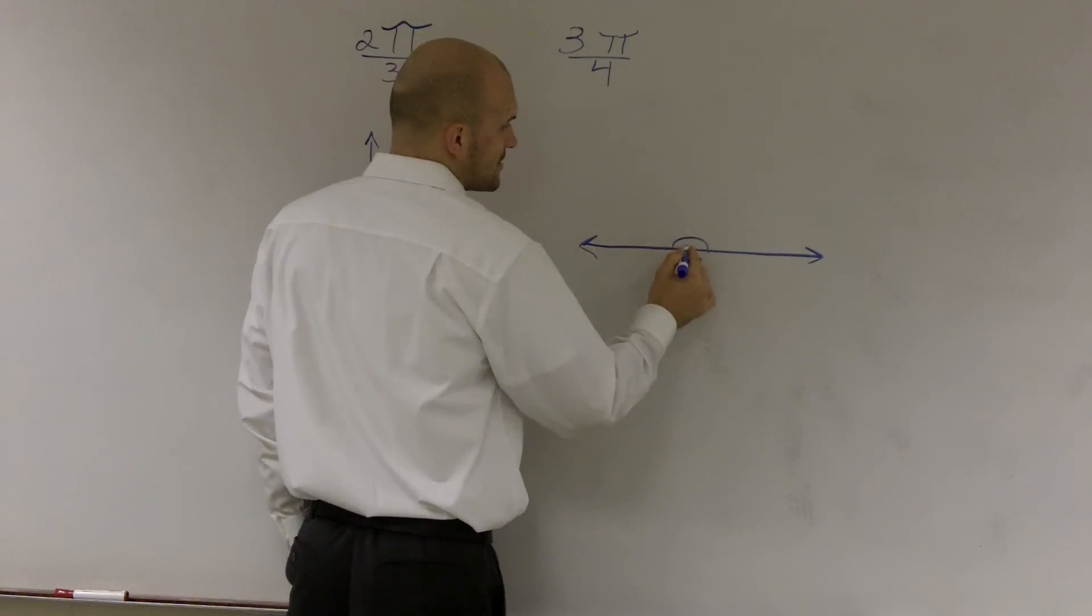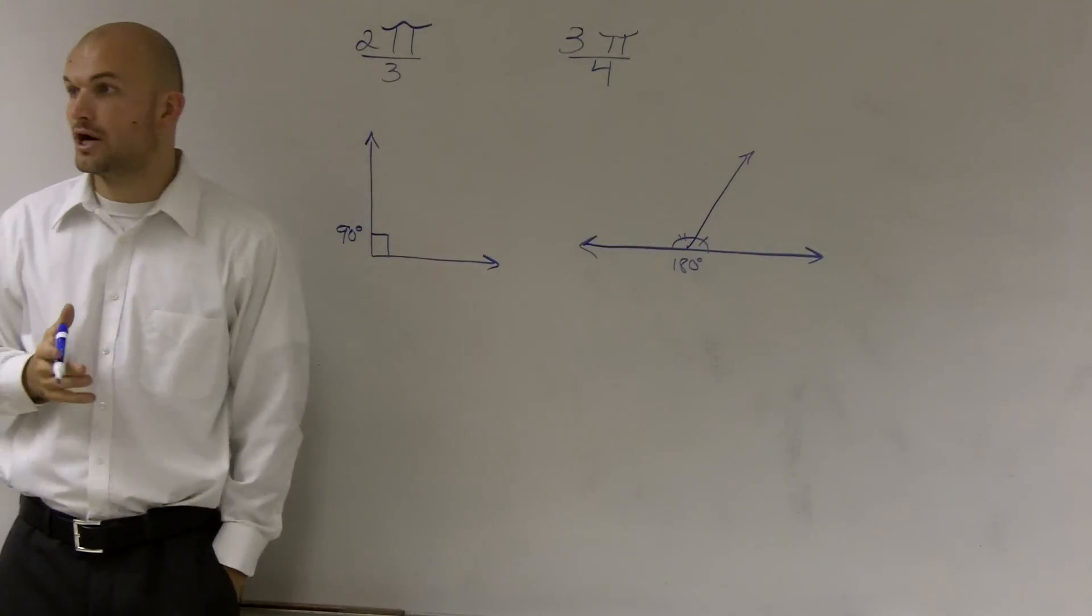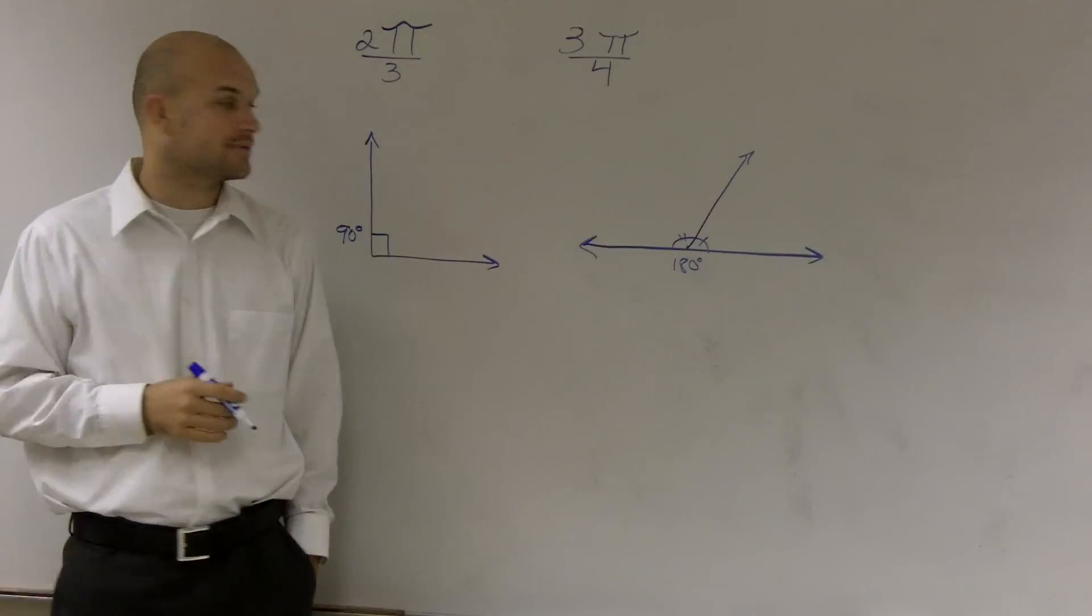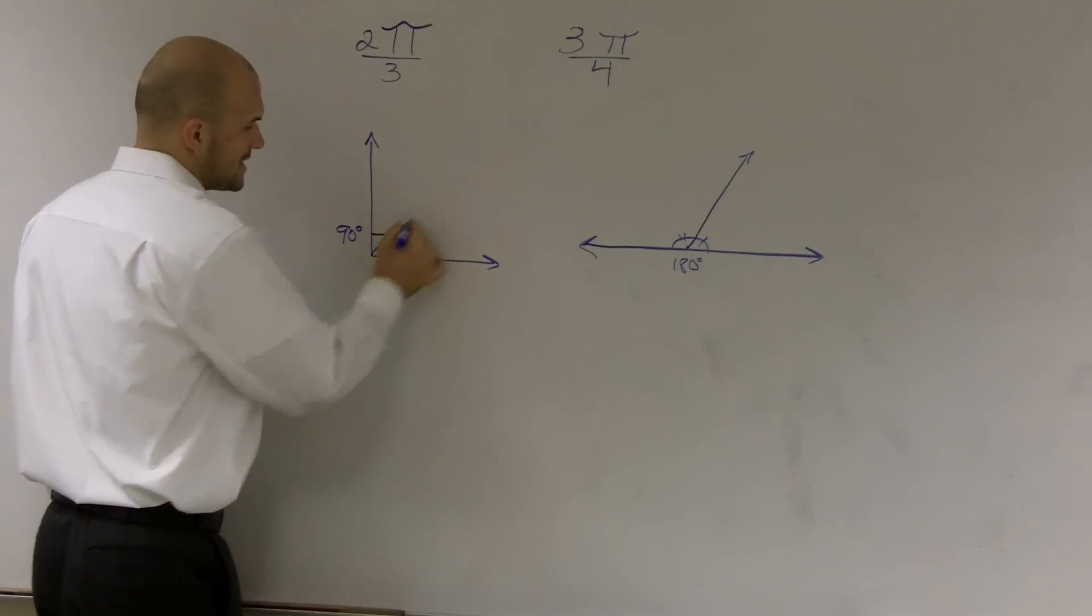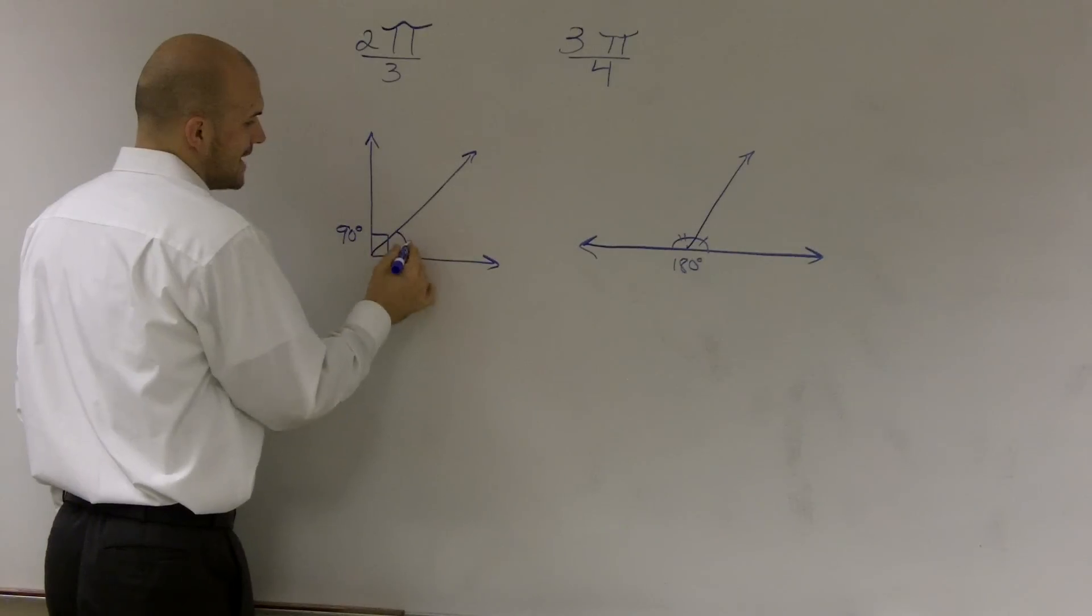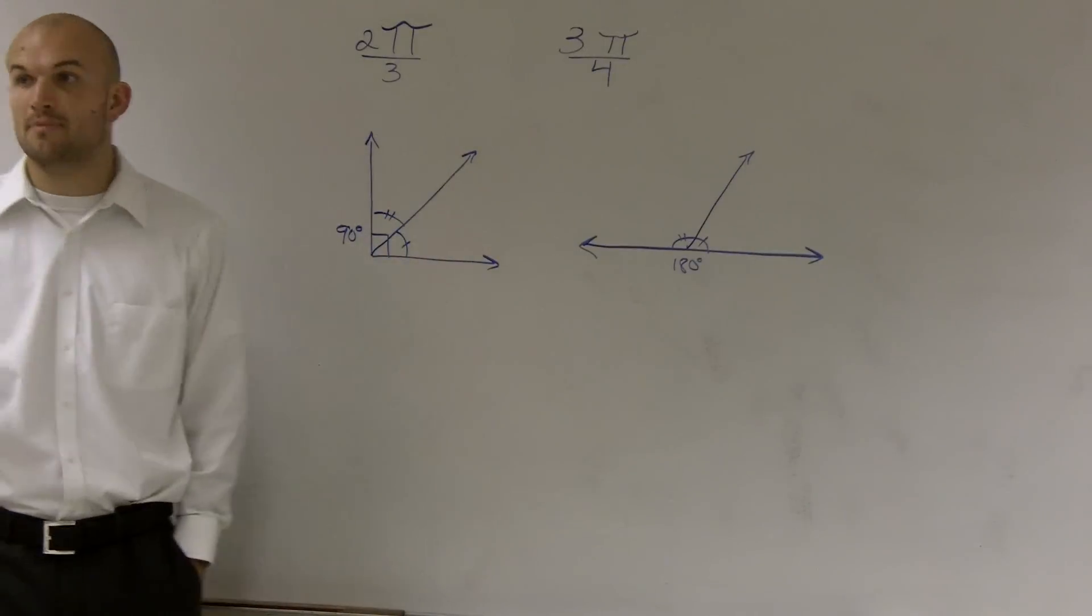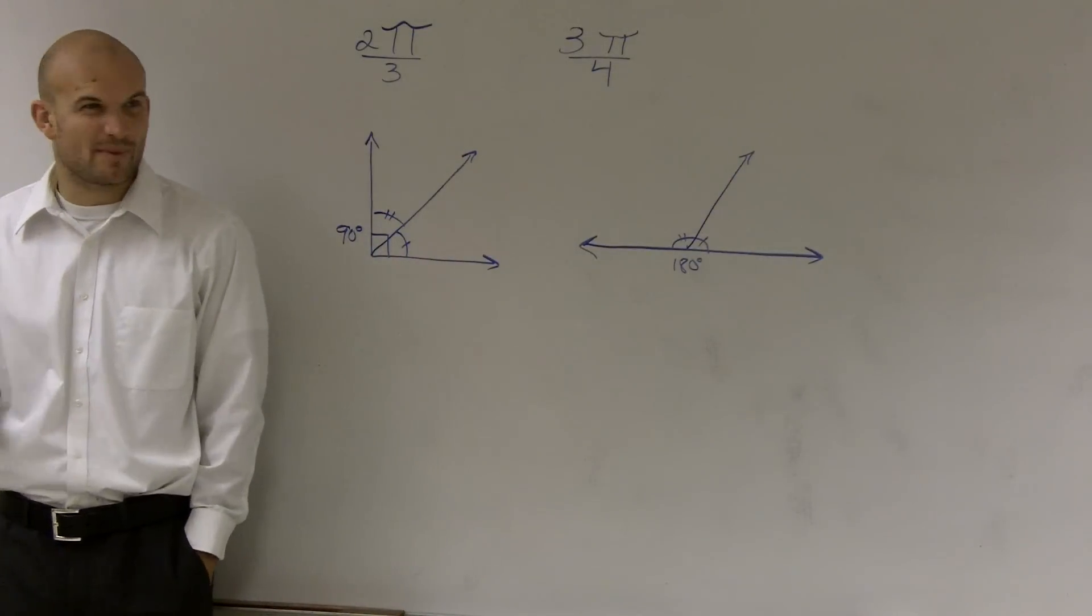We said that any two angles that add up to 180 degrees we call supplementary. And we said that any two angles that add up to 90 degrees were what we call complementary. You guys remember that?